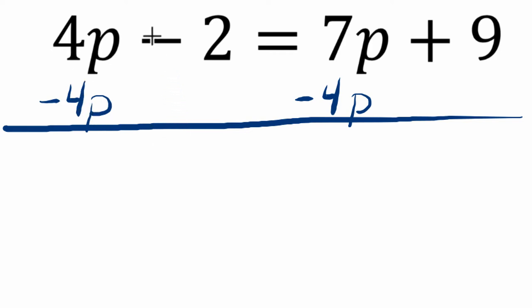4p minus itself is 0, and we have negative 2 left over. On the right side, 7p minus 4p is 3p, and then plus 9.